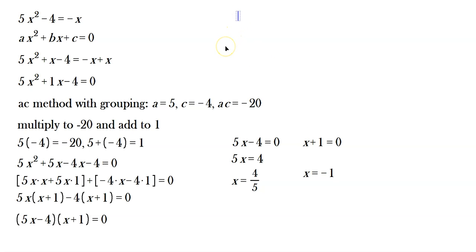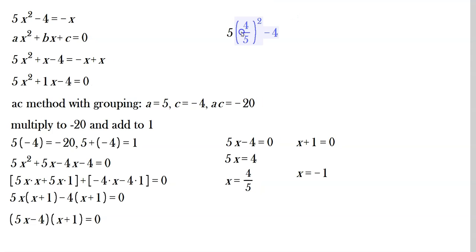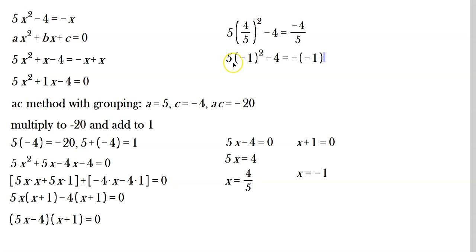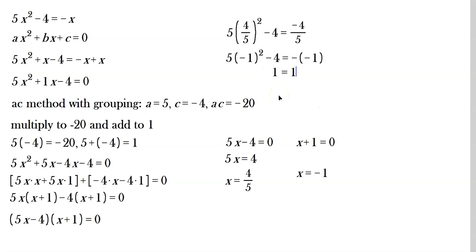Let's check them. If you do 5 times (4/5) squared minus 4, that equals negative 4/5. On the right side, plugging 4/5 into negative x also gives negative 4/5 — so 4/5 checks out. For negative 1: 5 times (negative 1) squared minus 4 — that's 5 minus 4, which is 1. And the negative of negative 1 is also 1, so negative 1 checks out too. So the answers are 4/5 and negative 1.